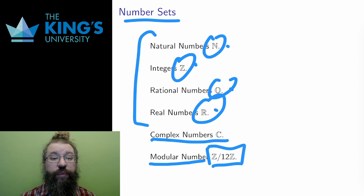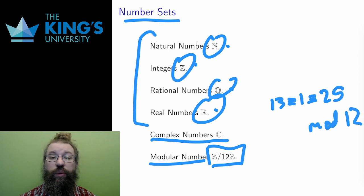When the clock gets back to 12, it resets to 0. In this system, 13 is the same as 1 and is the same as 25, because all numbers are reduced back to their place in the clock, their values between 0 and 12.